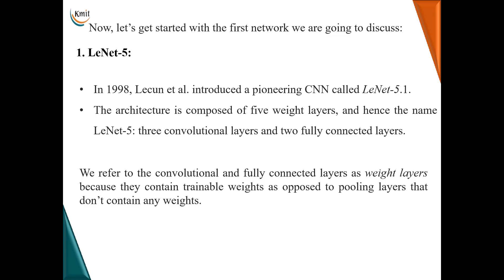Let us start with the first CNN architecture: LeNet-5. It was developed in 1998 by a scientist called LeCun and is composed of 5 weight layers, hence named LeNet-5. Out of those 5 weight layers, 3 are convolutional layers and 2 are fully connected layers. We refer to these as weight layers because they contain trainable weights. Pooling layers are not weight layers because they do not contain any weights — they are only used for spatial reduction.